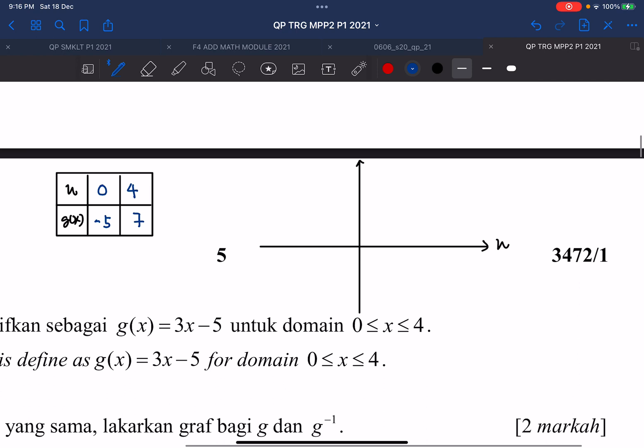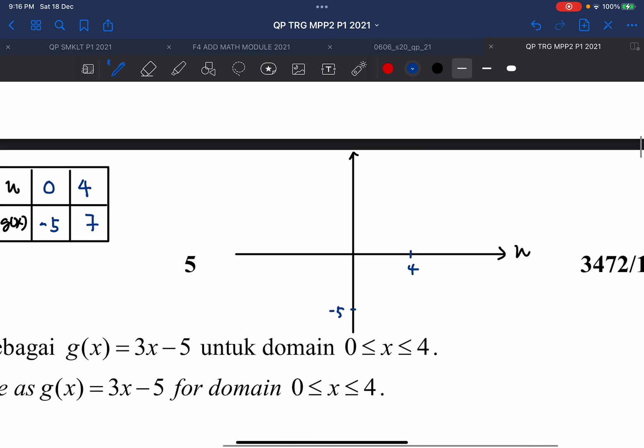So I can start to plot my Gx graph, which is here should be my negative 5, here should be my positive 4, and here maybe my 7. So this might be my point.